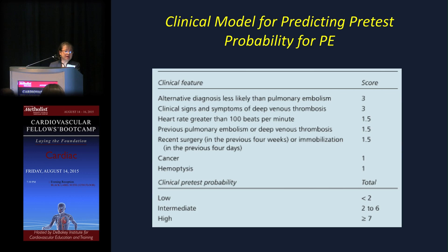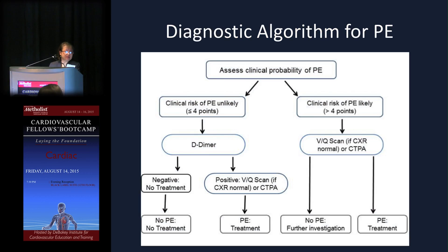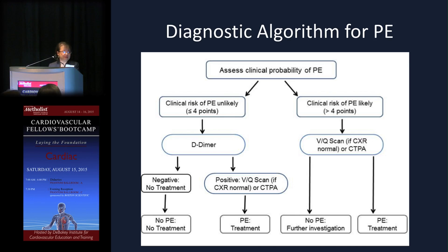A score less than 2 is low probability, 2 to 6 is intermediate, and greater than or equal to 7 is high probability. For low risk, get a D-dimer — if negative, PE is ruled out; if positive, proceed to imaging. For high probability, go directly to VQ scan or CT and treat accordingly. If the patient has a confirmed PE, treat; if no PE on imaging with high suspicion, investigate further.